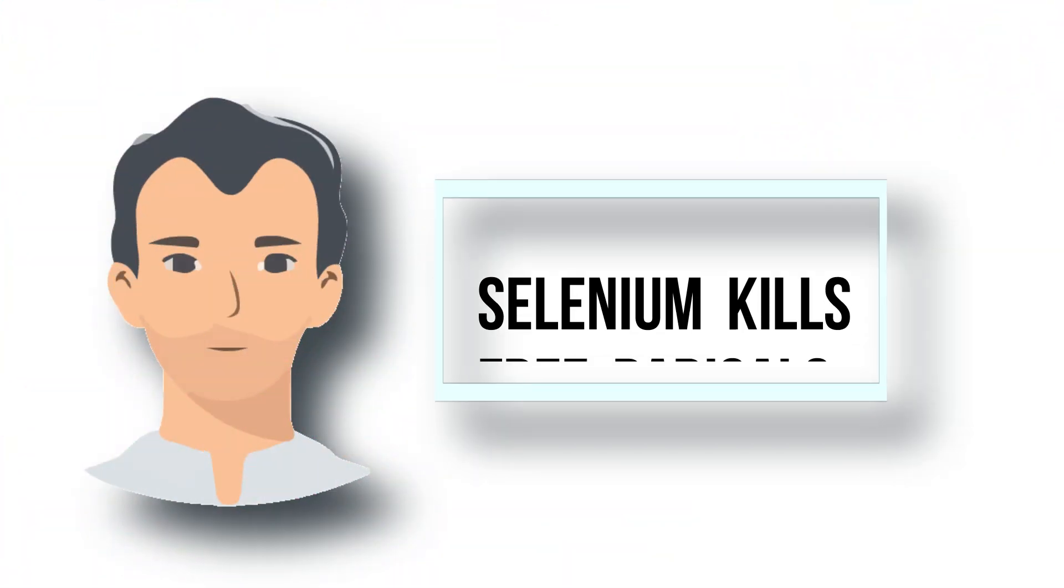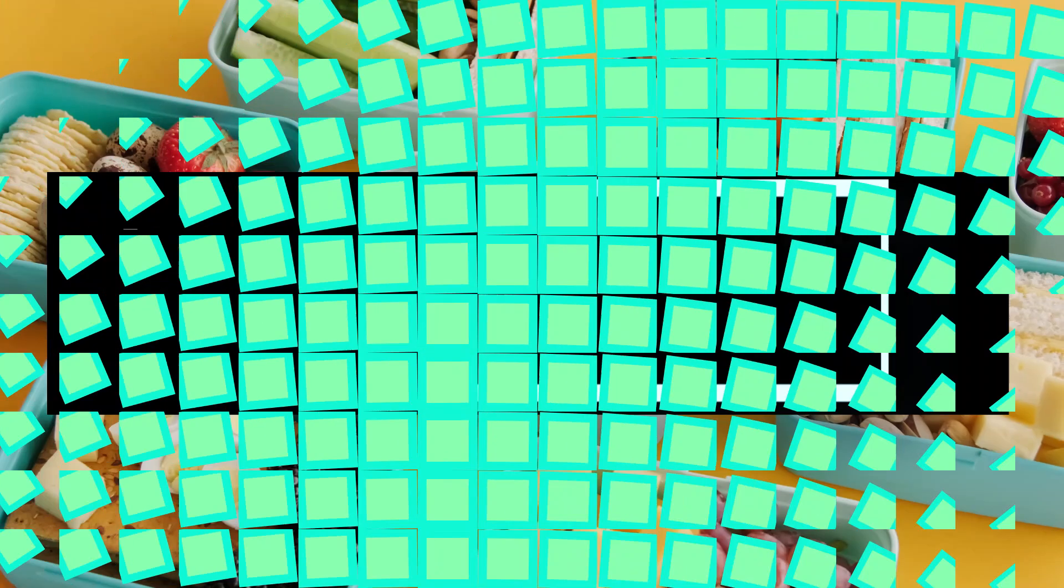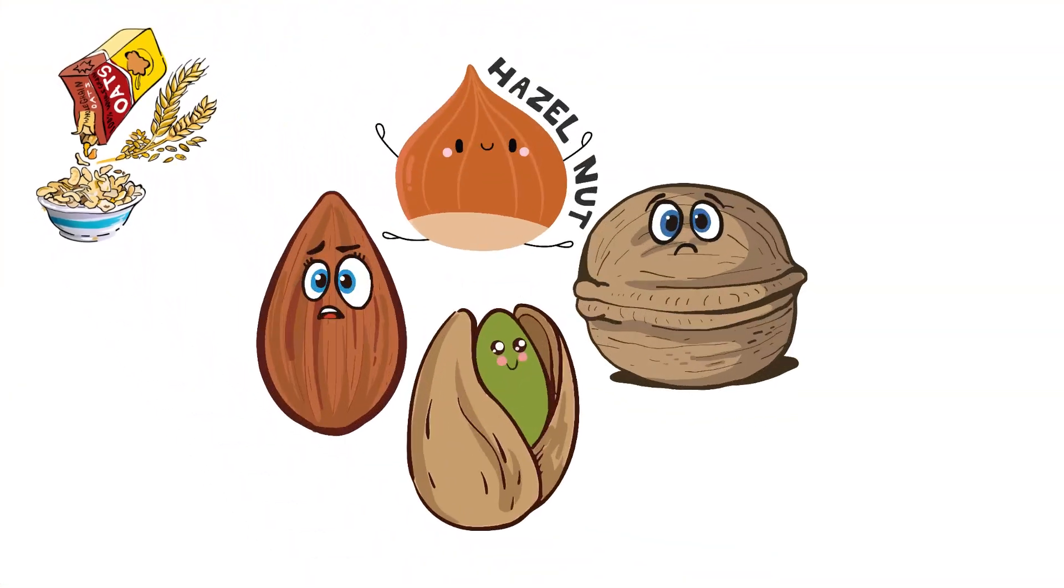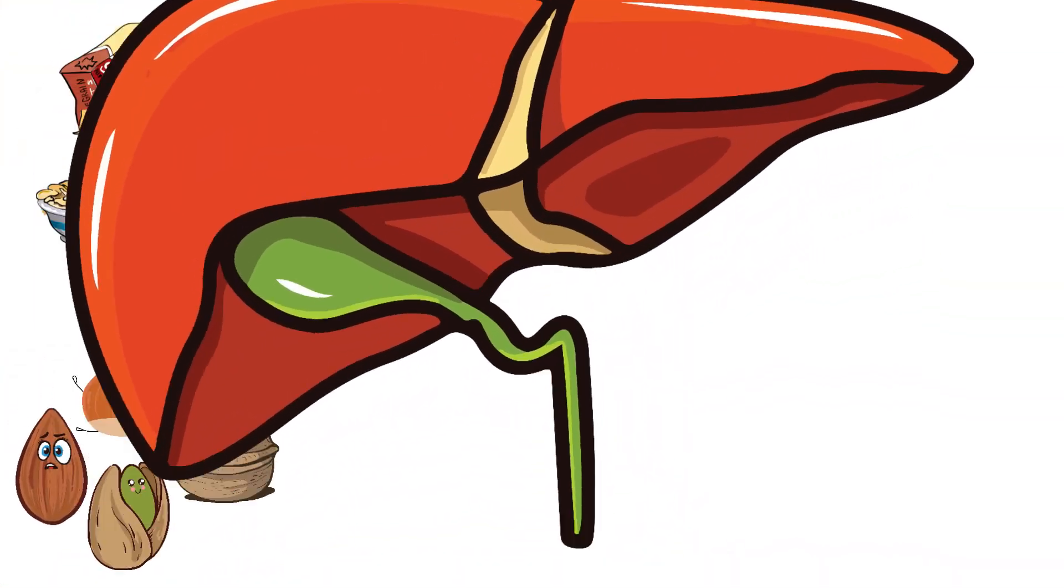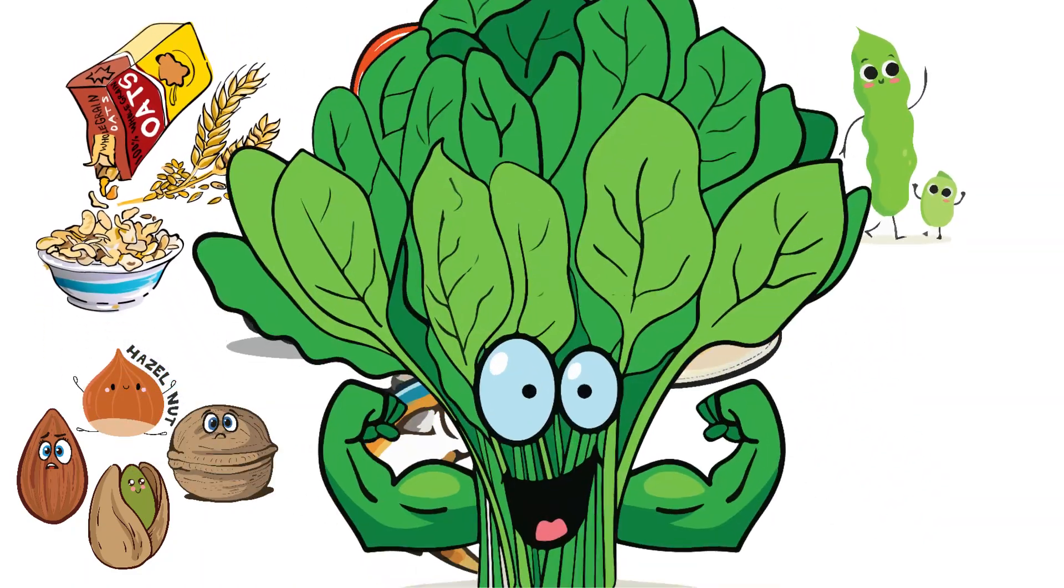So selenium works for healthy hair growth by killing these free radicals. The foods that are rich in selenium include whole grains, nuts, garlic, liver, tuna, eggs, beans, oatmeal, and spinach.